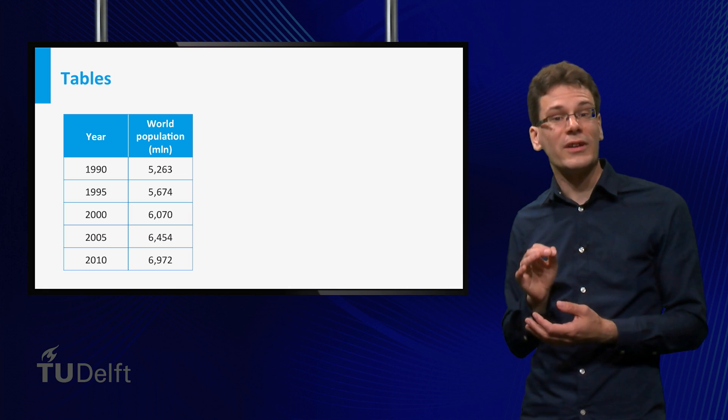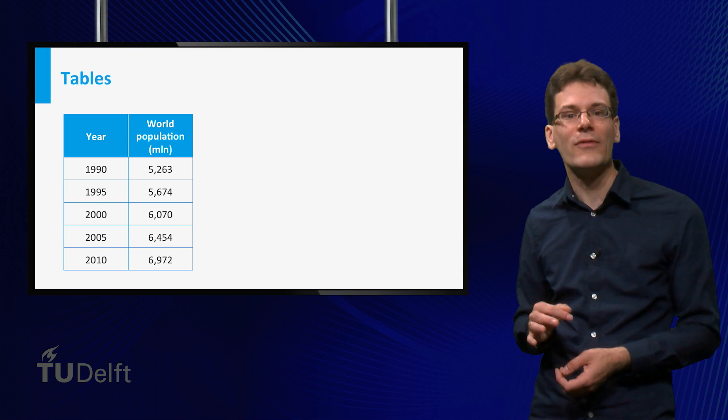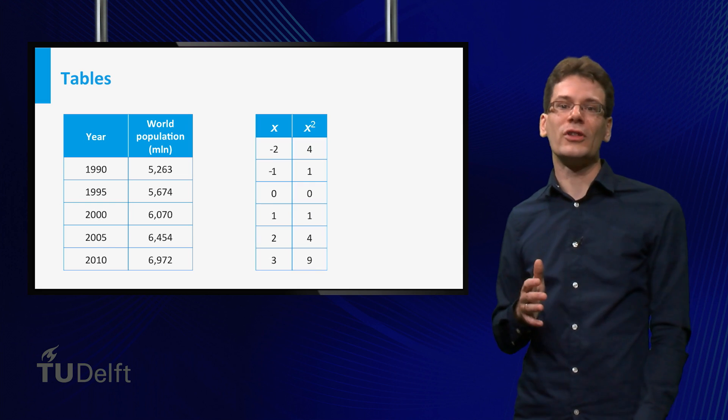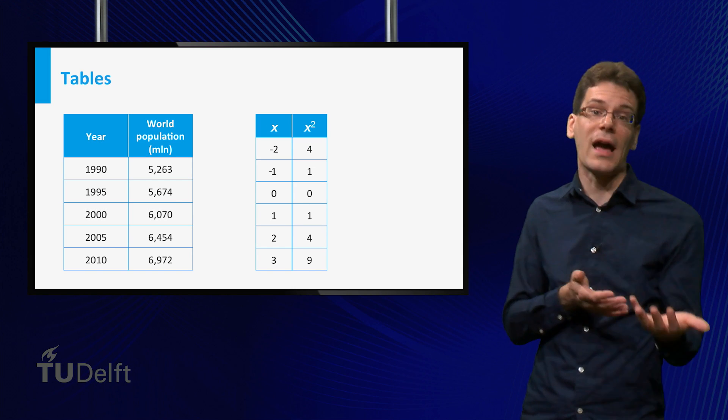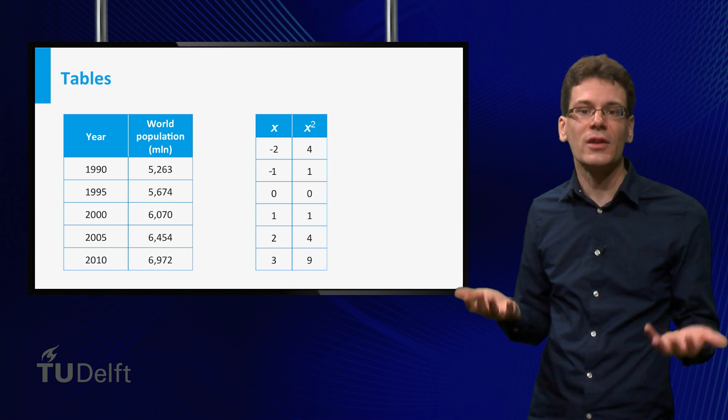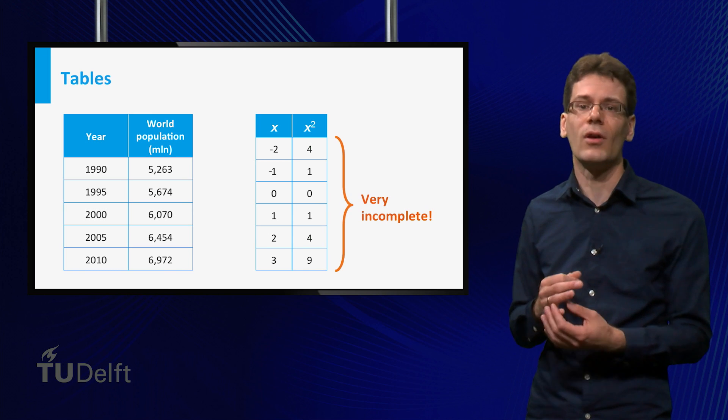The problem is that you can only adopt finitely many possible inputs. More explicitly, think again of the square function. You can make a table for this function, adopting a number of possible input values and corresponding output values, but this table does not make clear what happens for other input values. It is a very incomplete description of the function.